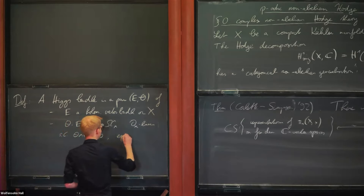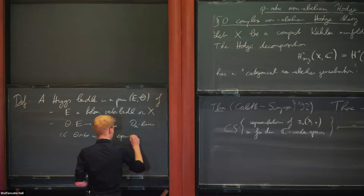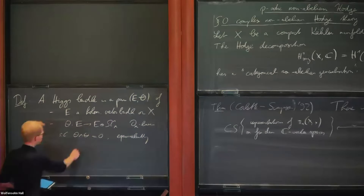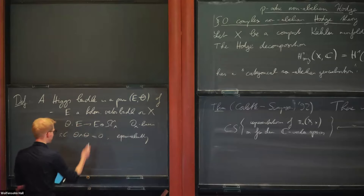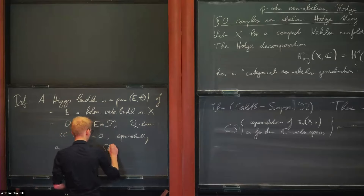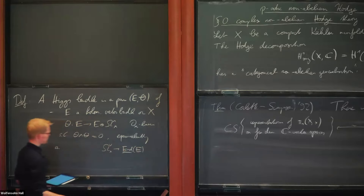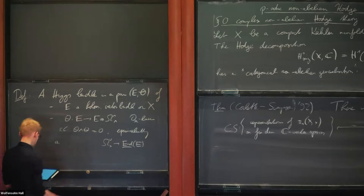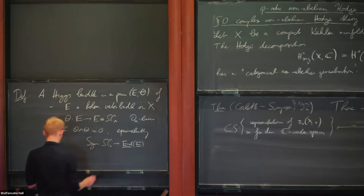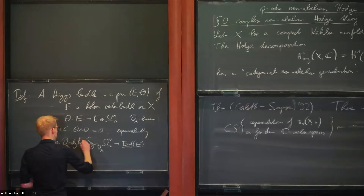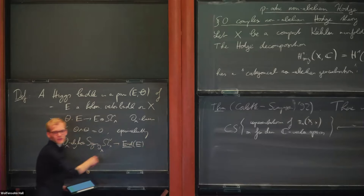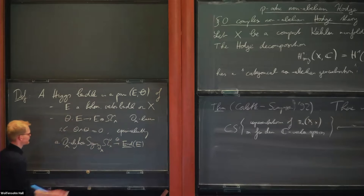Let me write down something that's perhaps more useful in practice. Equivalently, this last commutativity condition means that if you dualize this thing — which you can because it's O_X-linear — then you can make sense of it as a morphism from the dual of the differentials into the endomorphisms of the vector bundle, and the commutativity condition says that this extends to the symmetric algebra. So equivalently, this is the datum of an O_X-algebra homomorphism of this form. That's how I like to think about the Higgs field.